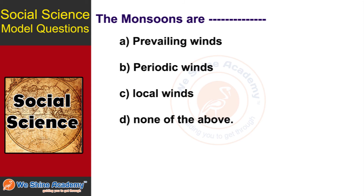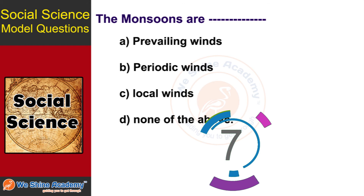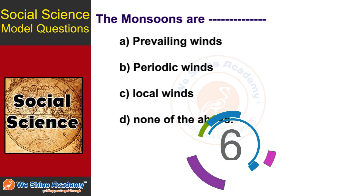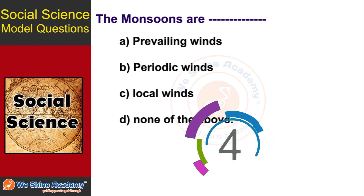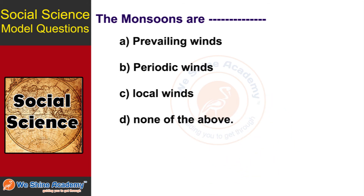The next question is: the monsoons are dash. In 10 seconds, find the correct answer. The answer is Option B: Periodic winds. That is how monsoons are classified.